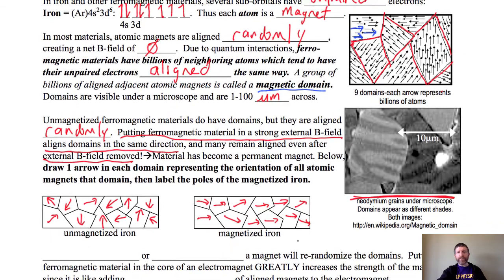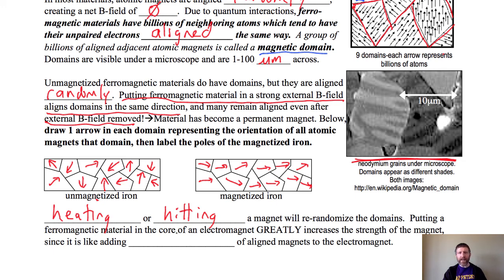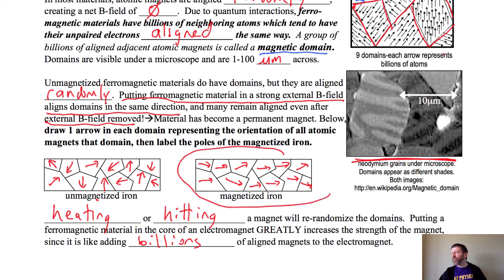Heating or hitting a magnet on something solid will re-randomize the domains. And if you put a ferromagnetic material in the core of an electromagnet, it greatly increases the strength of the magnet, since it's like adding billions of aligned magnets to the electromagnet. Putting an iron core inside an electromagnet can make it thousands of times stronger because you're adding millions or billions of little atomic magnets all lined in the same direction.